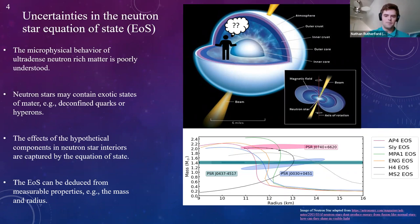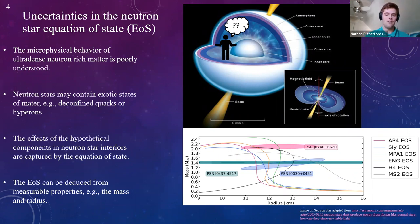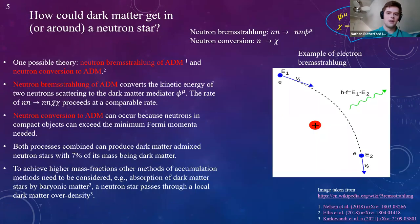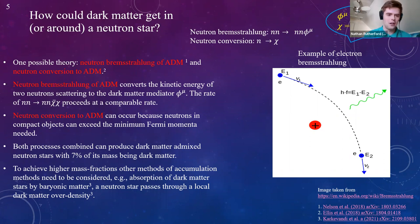Given this uncertainty, dark matter can also have a significant impact on the mass and radius of neutron stars. The question is: how can dark matter get in or around these stars? One possible theory is neutron bremsstrahlung of ADM and neutron conversion to ADM, both proposed by Nelson et al.